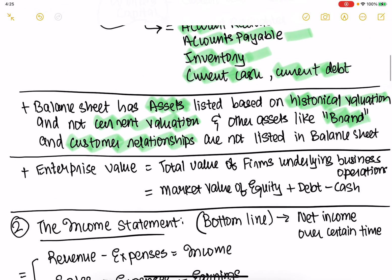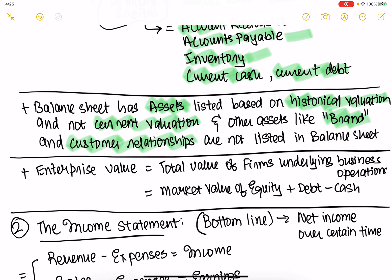Enterprise value is basically: if you were to liquidate this company today in the market, what would be the net value you would get? What you need for that is the market value of equity plus debt minus cash. It's basically the total value of the firm's underlying business operations.